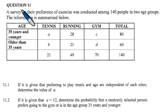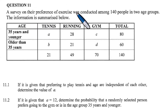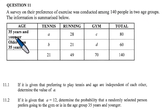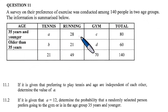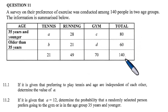In this lesson we shall solve question 11. A survey on preference of exercise was conducted among 140 people in two age groups. The information is summarized in a table: age 35 years and younger, and older than 35 years. Tennis: A, B; Running: 21, 28, 21, 49; Gym: C, D; Total: 80, 60, 140.